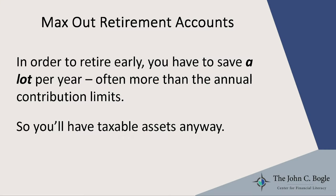Reason number one: in order to retire early, you have to save and invest a whole lot of money every year. You have fewer years to accumulate, fewer years to save, fewer years to earn investment returns, and more years of retirement to pay for. So the only way to make that happen is by saving a whole lot every year — maxing out your IRA, maxing out your 401k, and saving more than that. That extra pile is in a taxable account, so you'll have assets you can tap into that aren't in retirement accounts in the first place.